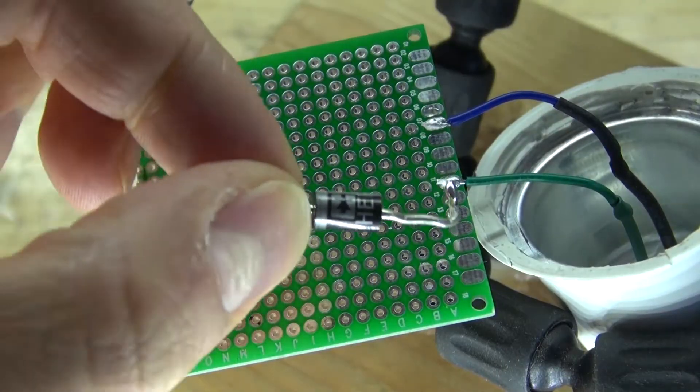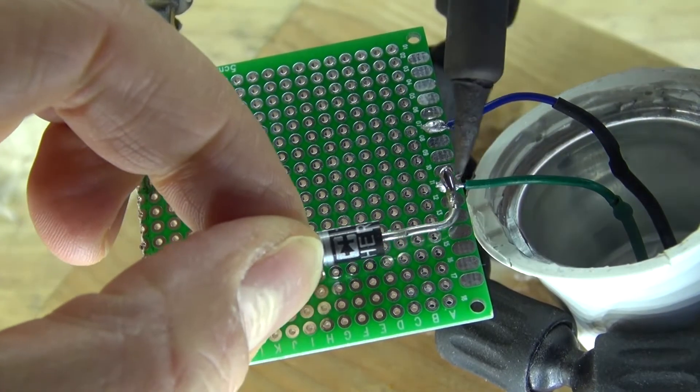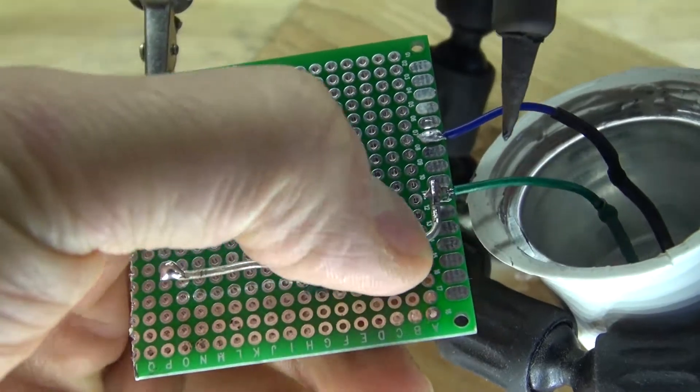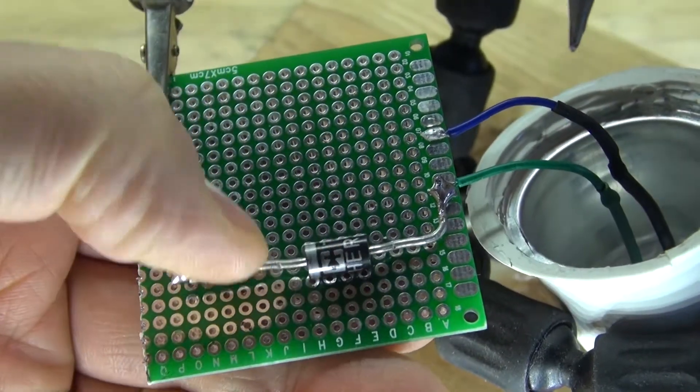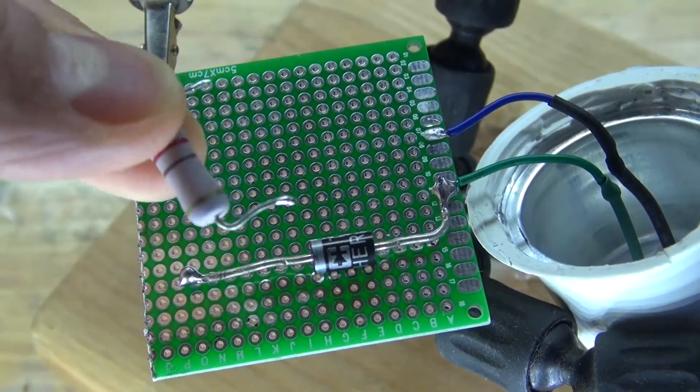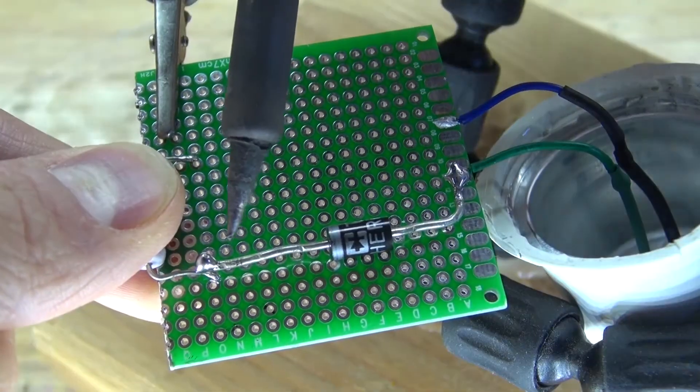Next take the anode of the diode and connect it to one of the wires. Next I'm going to take the resistor and solder it to the cathode of the diode.